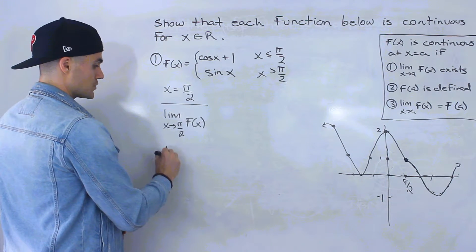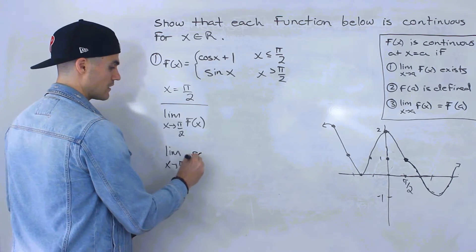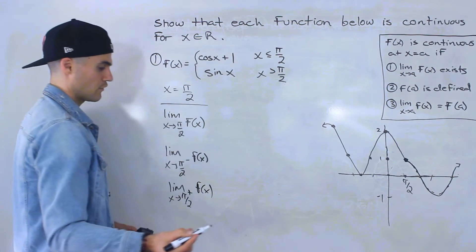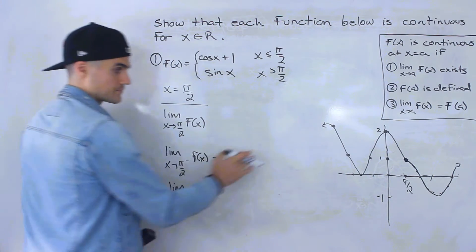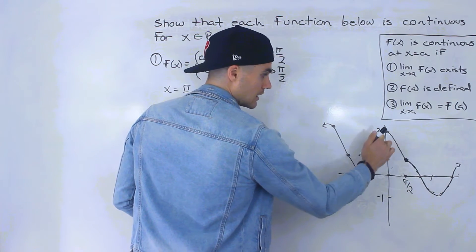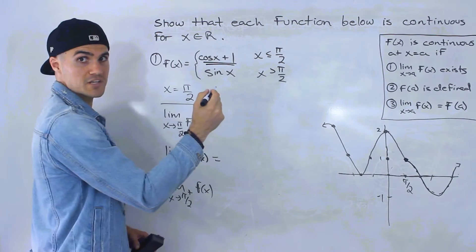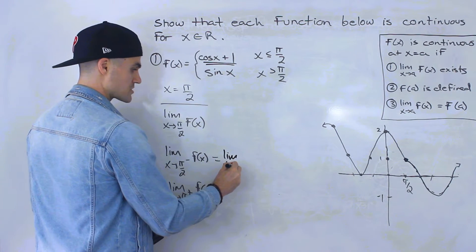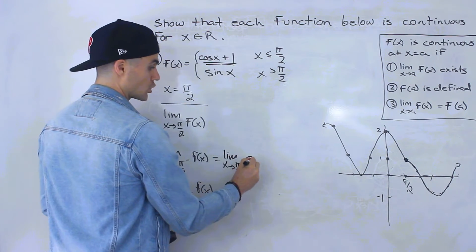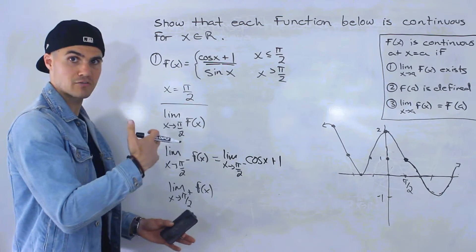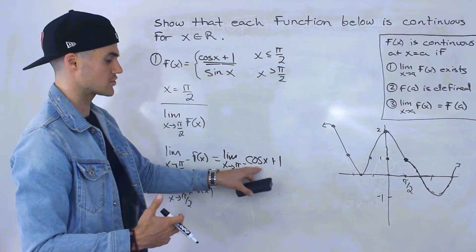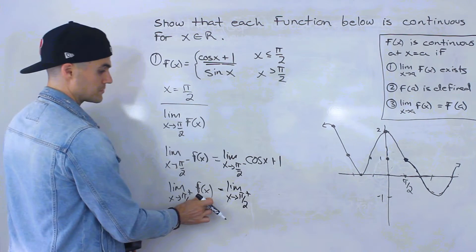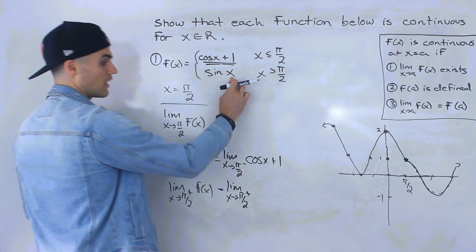To show the limit exists, we approach π/2 from the negative side and from the positive side. Approaching from the left, we deal with cos(x) plus one for x values less than π/2, so we rewrite the left-hand limit as the limit as x approaches π/2 from the negative side of cos(x) plus one. For the right-hand side, the piecewise function is defined by sin(x), so the right-hand limit is the limit as x approaches π/2 from the positive side of sin(x).